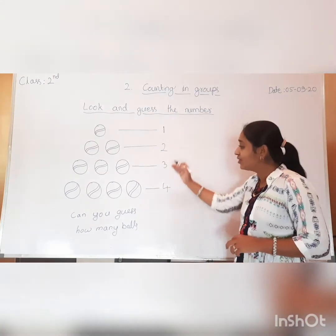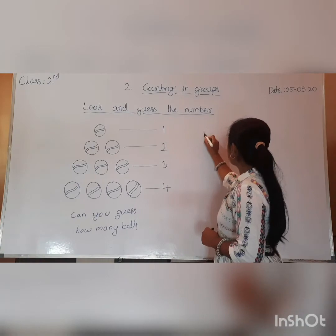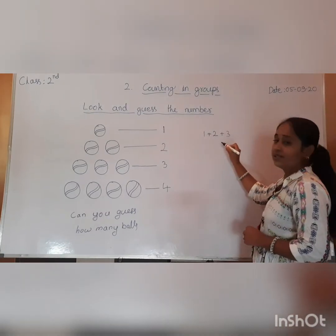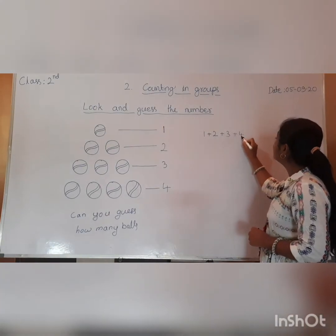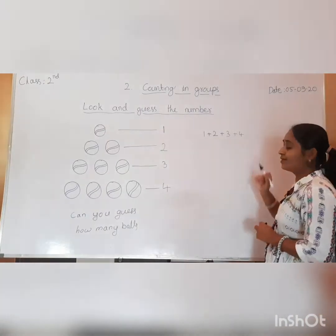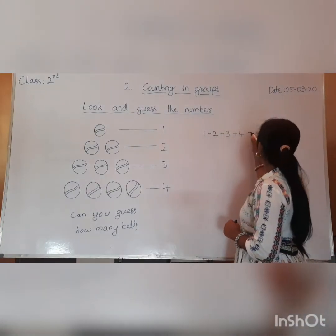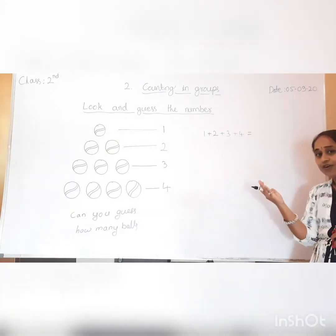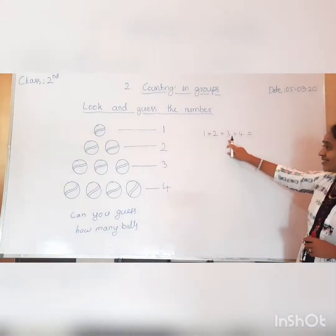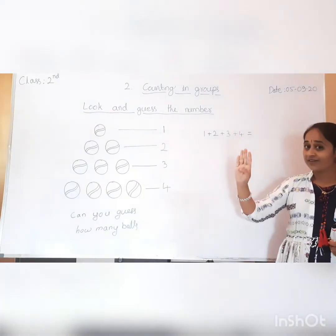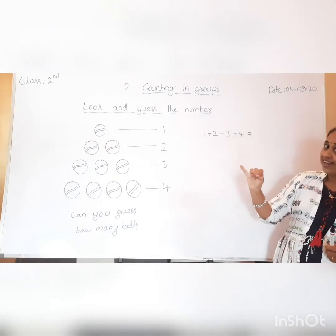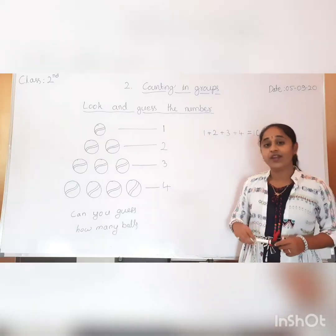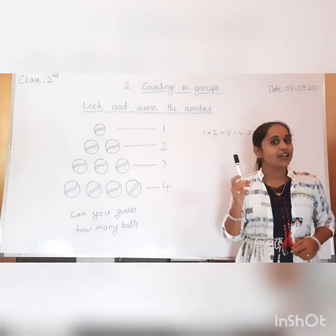Now we will count these balls. In the first row, one ball. Second row, two balls. Third row, three balls. Fourth row has four balls. We will count: one plus two is three. Three plus three is six. Six plus four is seven, eight, nine, ten. We have a total of 10 balls. It's a simple method. Have you understood?